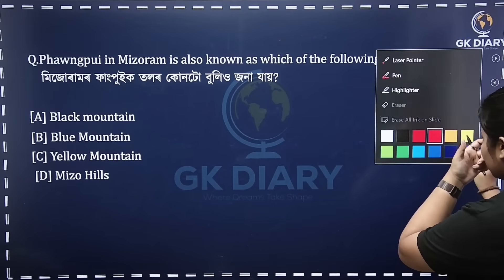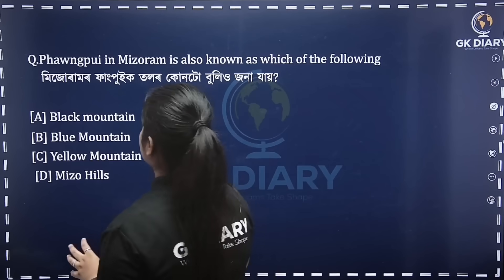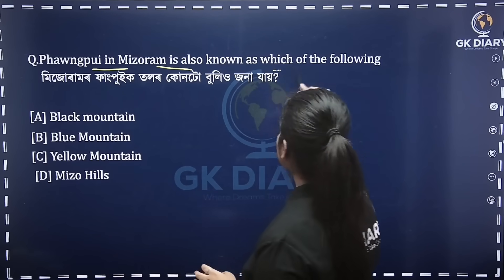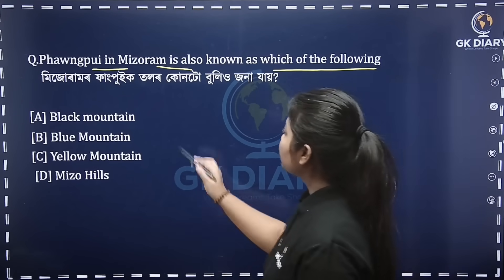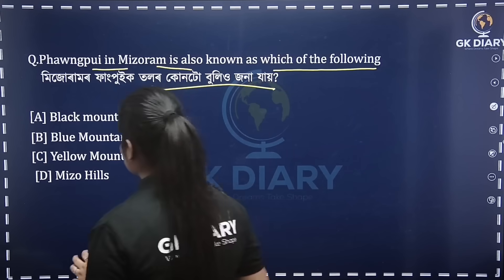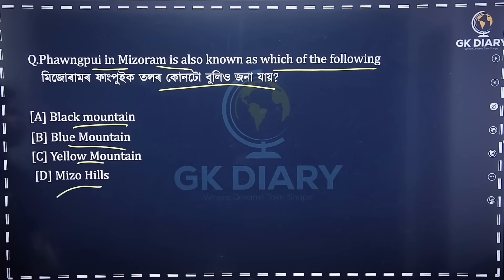So what is the first question? We are talking about Fangfui. Fangfui is also known as which of the following names. Fangfui is known as black mountain, blue mountain, yellow mountain, or major hills. This area is from Mejo Hills, which we know as Shara Hills. It looks like the example of Blue Mountain.